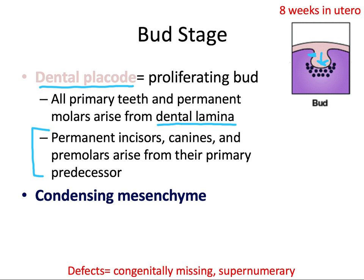The mesenchyme is also beginning to condense underneath the bud — that's what the dark blue and purple dots are showing, that this tissue is starting to condense directly underneath the bud. Failure in the bud stage again results in congenitally missing teeth where the budding process doesn't occur at all, or supernumerary teeth where we have excessive budding happening.